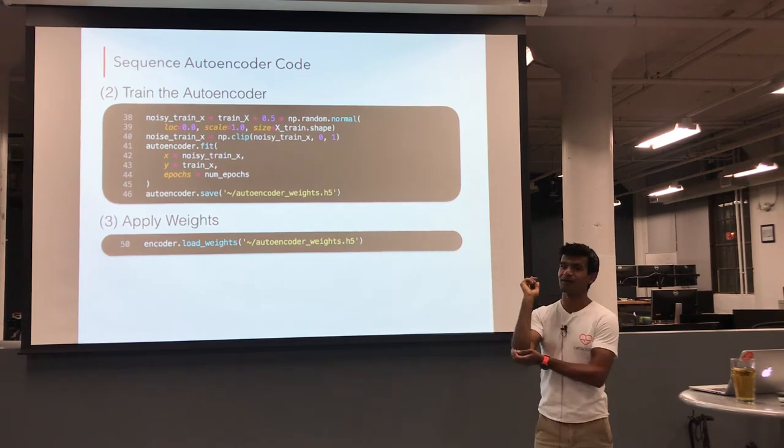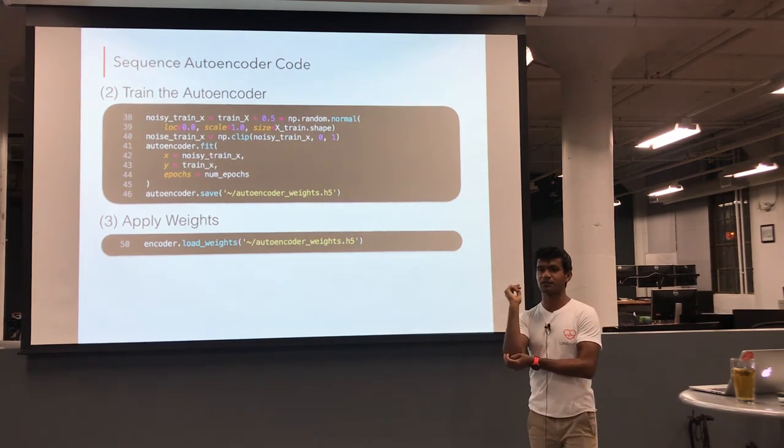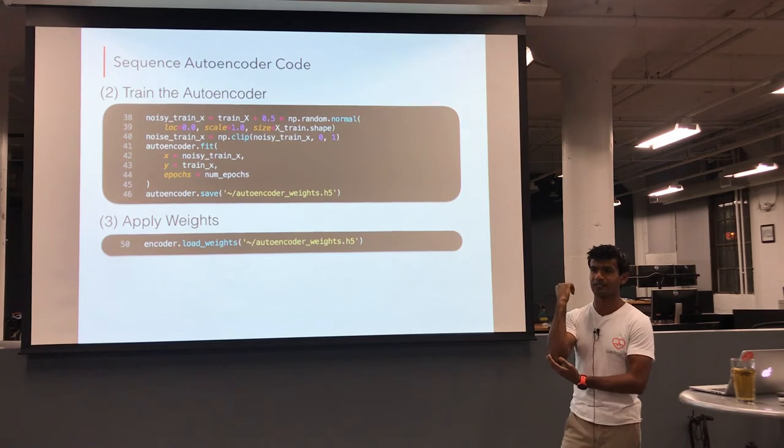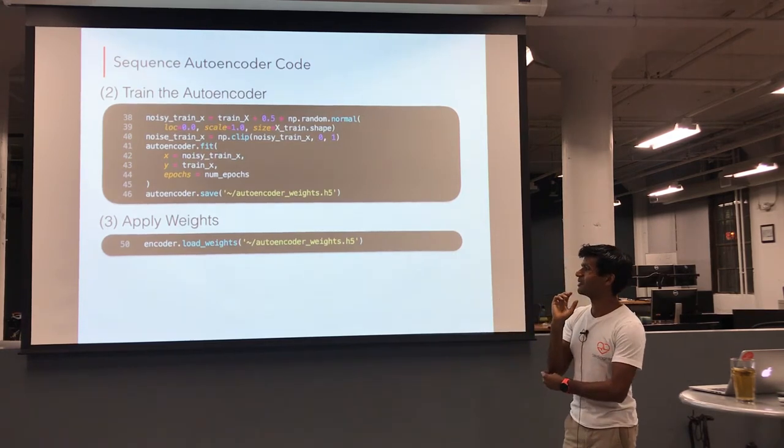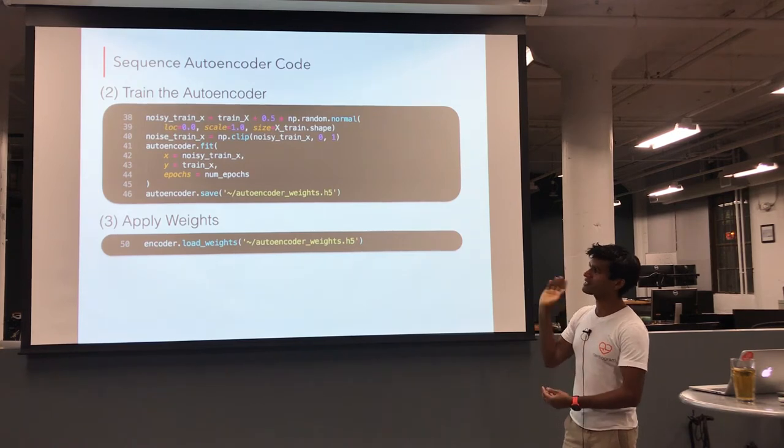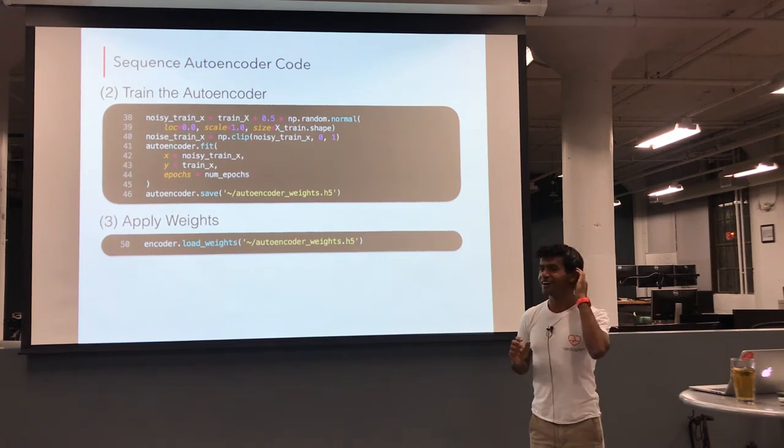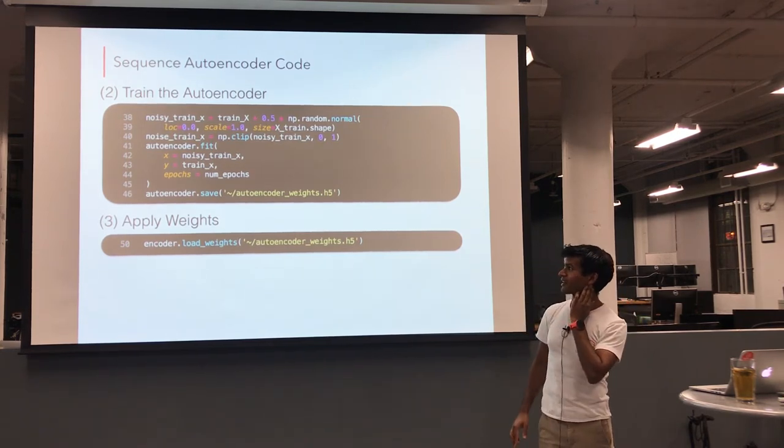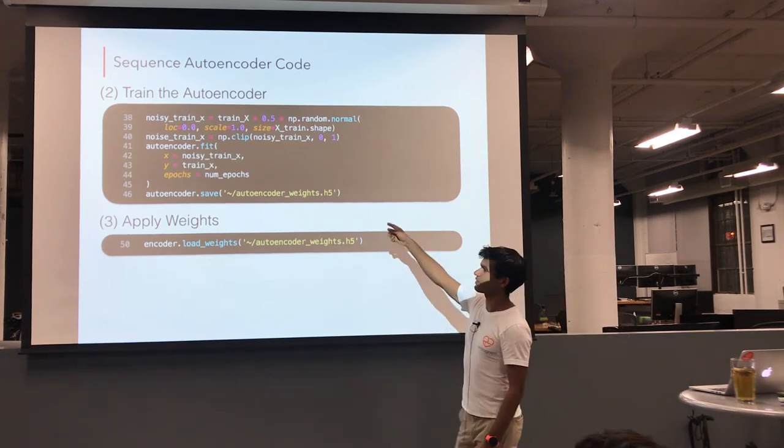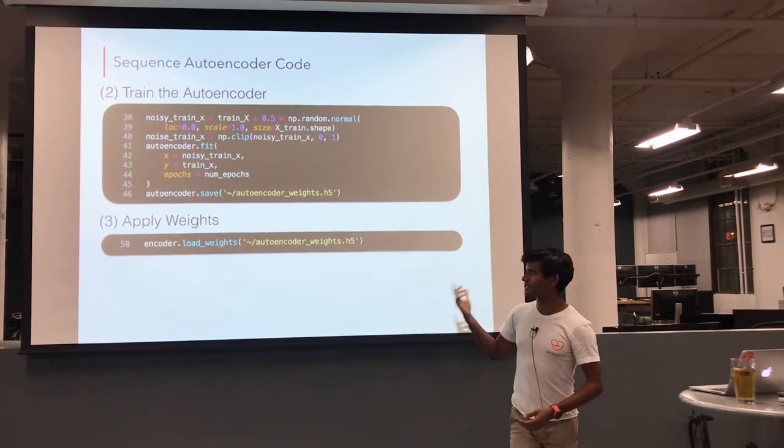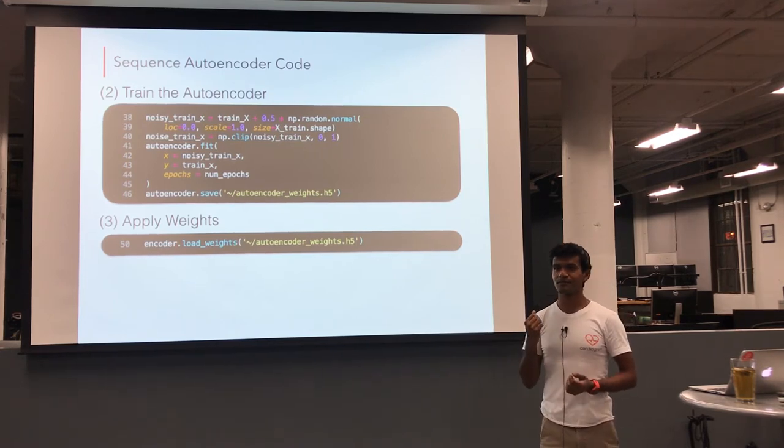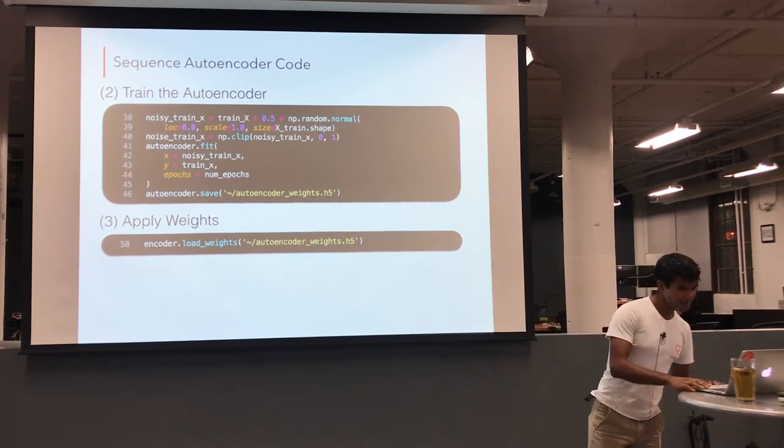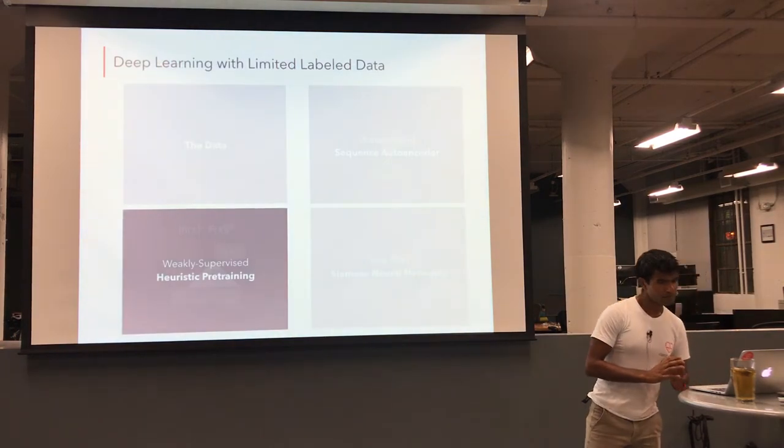And that becomes our input data, this noisy train X. And the output is train X. We run for about 40 epochs. This is actually very slow, because we train on a large amount of data. Because we could use all 200,000 of our monthly active users for this, because we don't need labels. We don't, because that takes too long. But because of the scale of data we train on, this takes about four or five days right now to train this autoencoder. But luckily, once we've trained it, we just save the weights in this h5 file, and then we restore them prior to doing supervised training. Make sense?